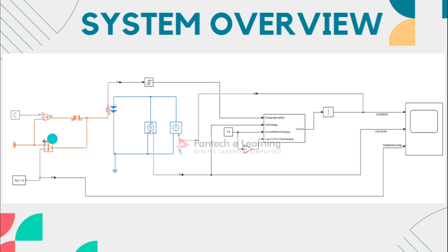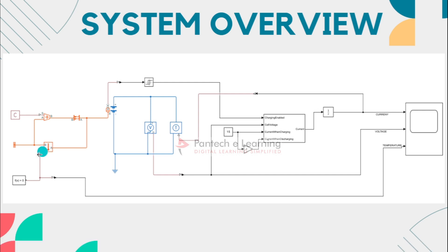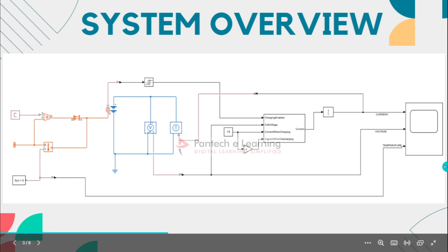Next is the constant temperature sensor block. This block represents a temperature sensor used to monitor the temperature of the battery. It measures the temperature and provides feedback to the simulation model.